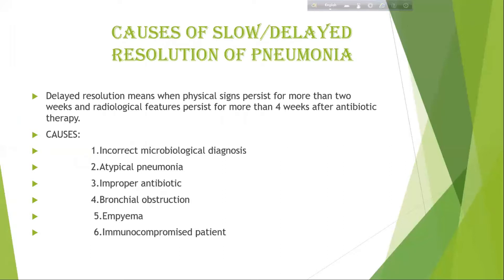Causes of slow or delayed resolution of pneumonia. Delayed resolution means when physical signs persist more than 2 weeks and radiological features persist for more than 4 weeks after antibiotic therapy. Causes include: incorrect microbiological diagnosis, atypical pneumonia, improper antibiotic use, bronchial obstruction such as adenoma or carcinoma, empyema, and immunocompromised status.